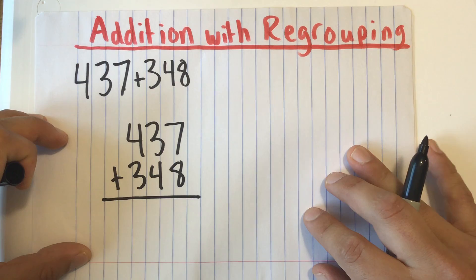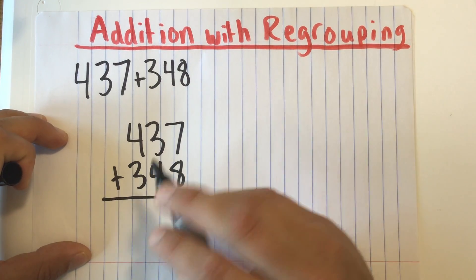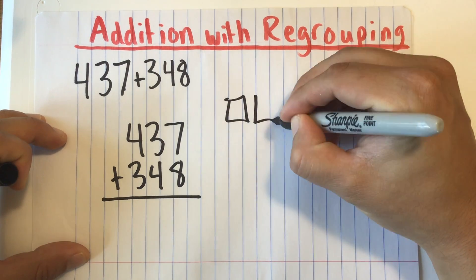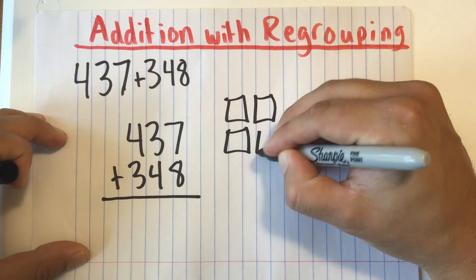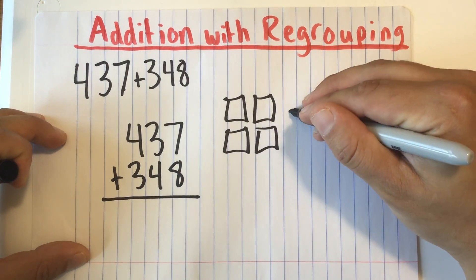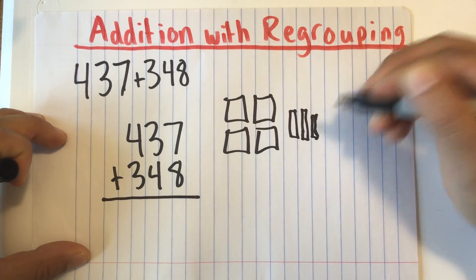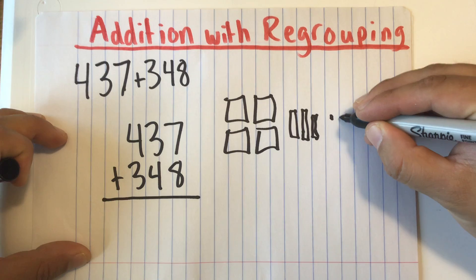And let's go ahead and draw these two numbers in base 10 blocks over here. Okay, so we'll draw our 400s, 3 tens, and 7 ones. I'm just going to make dots.